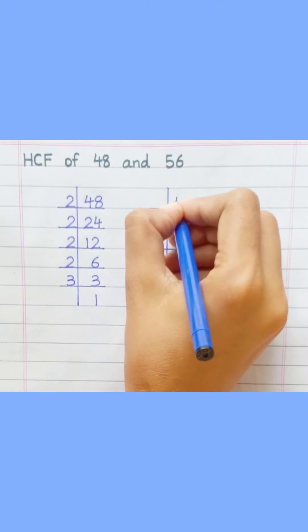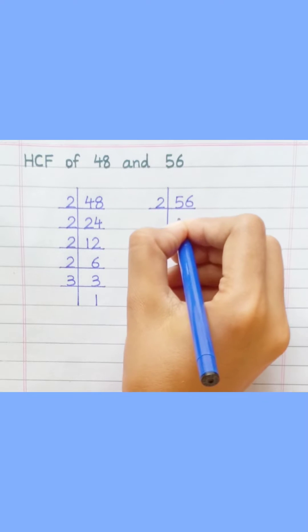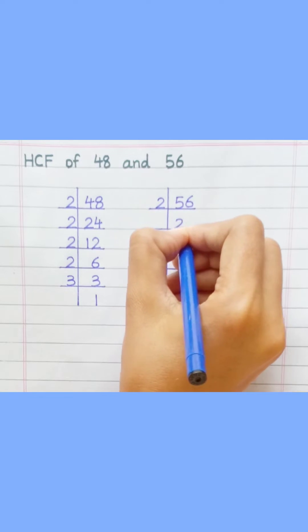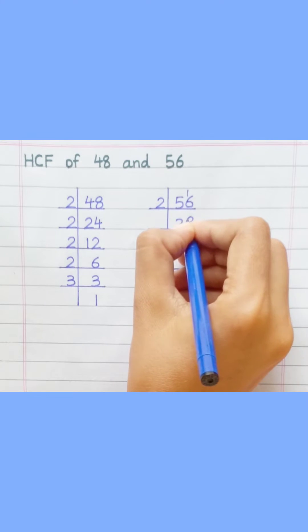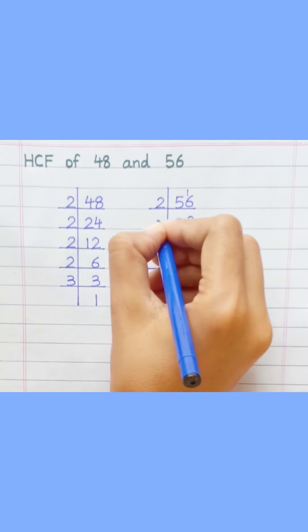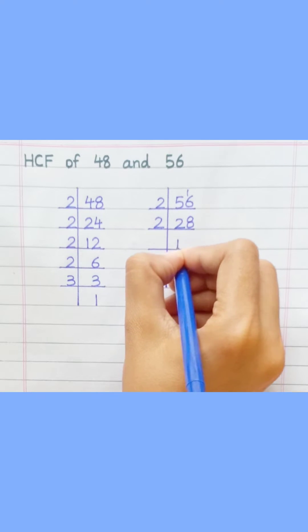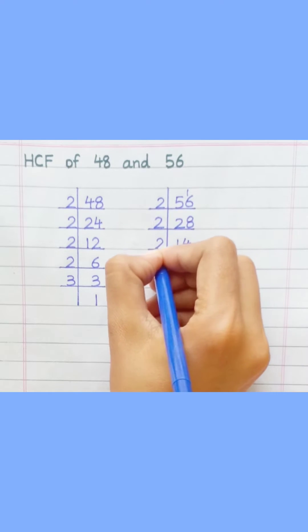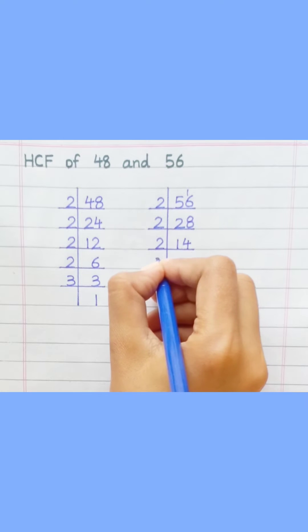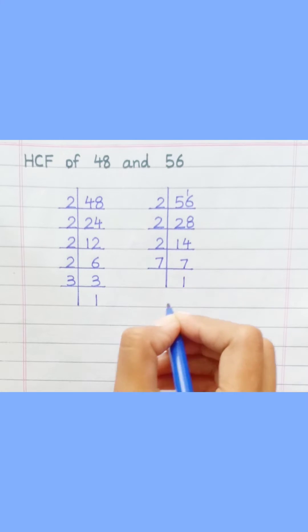Now 56: 2 2s are 4, 2 8s are 16, 2 1s are 2, 2 4s are 8, 2 7s are 14, 7 1s are 7.